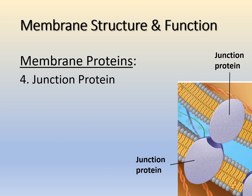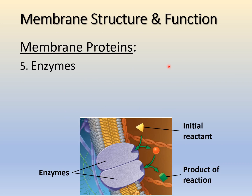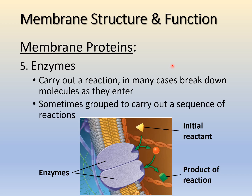The fourth type is the junction protein, whose job is to bind to a junction protein on another cell — like a buddy system — allowing two cells to attach to each other. We also have enzymes found in the membrane. These carry out reactions, often breaking down molecules as they enter or within the cell. They can work as single enzymes or grouped together in sequence to carry out a chain of reactions.